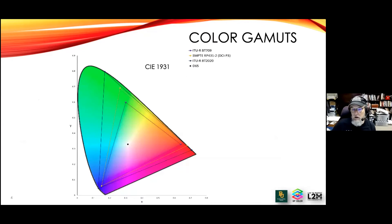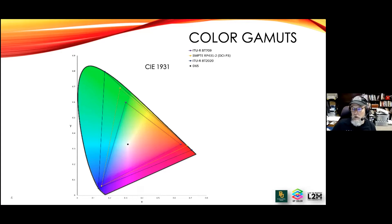As those areas go from REC-709 to P3 to REC-2020, if you're using the same bit depth — say eight bits, giving 256 steps for each color, red, green, and blue; or 10 bits giving 1,024; or 12 bits giving 4,096 — then you have bigger steps from the primary to the white point as the gamut expands. You have the same number of steps, but they're bigger. So your accuracy of reproducing color goes down as you increase the gamut if your bit depth stays the same — less like an incline and more like stair steps — particularly for vitally important adjustments like flesh tone.